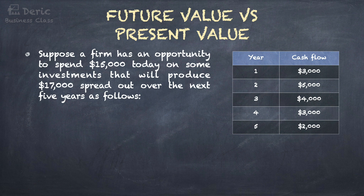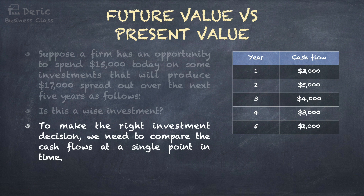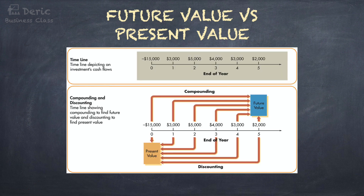Let's look at this question. Suppose a firm has an opportunity to spend $15,000 today on some investments that will produce $17,000 spread out over the next five years, as shown in the table. Is this a wise investment? Pay $15,000, earn back $17,000. In fact, we are not sure. The returns of $17,000 are not a one-off payment, but they are spread out over the next five years. To make the right investment decision, we need to compare the cash flows at a single point in time — either we convert all the cash flows to year five to get the future value, or we convert all the cash flows back to year zero to get the present value. Cash flows from different years are not comparable, as they have different time value.